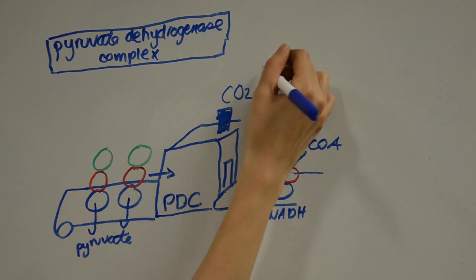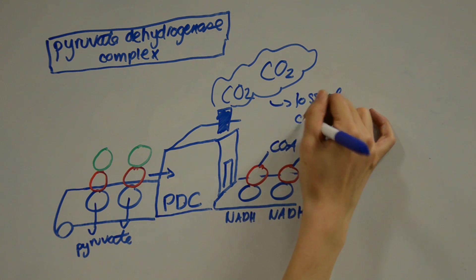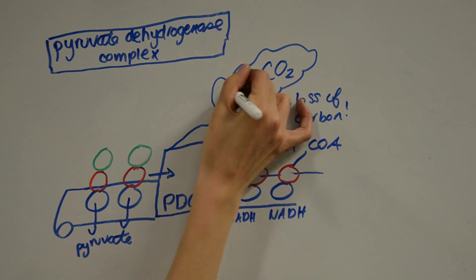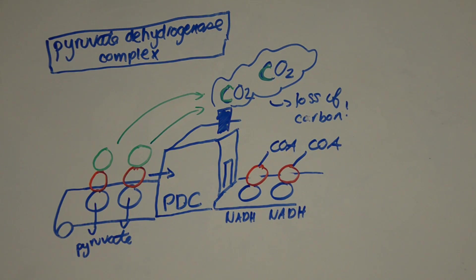This step is not too efficient because for every glucose molecule, two carbons are lost. This is undesirable, especially for applications in biorefining and carbon efficiency of cell growth. How can we improve this pathway?